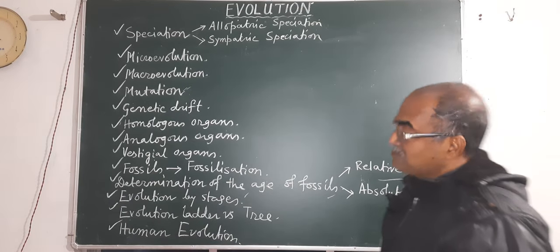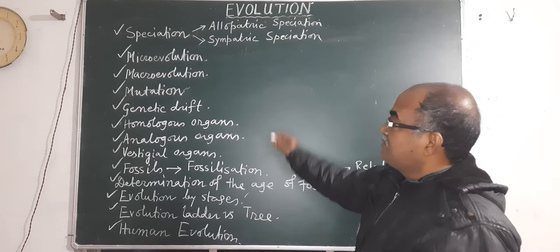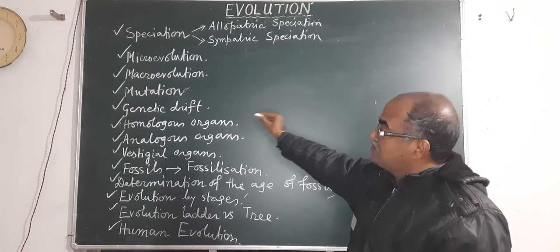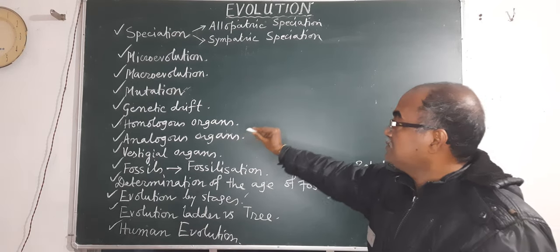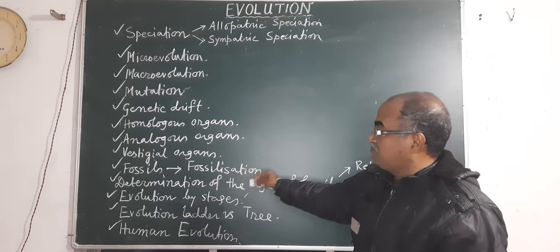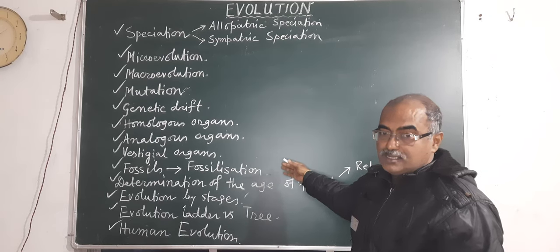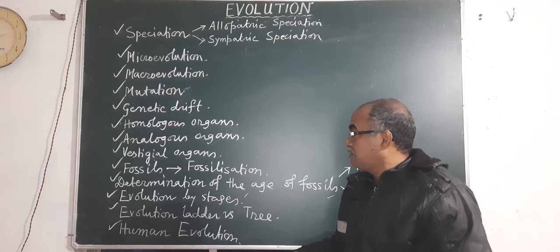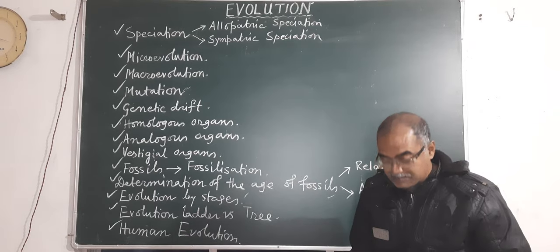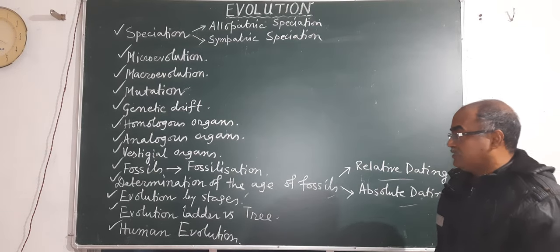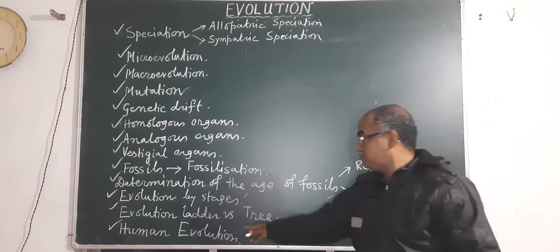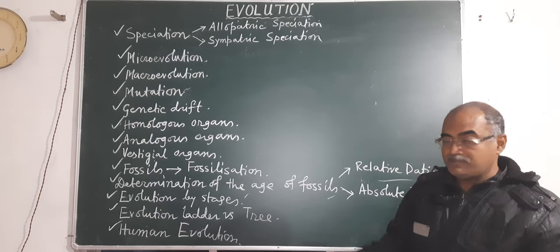So now probably you are clear about what we have studied today. Speciation — allopatric and sympatric speciation. Then microevolution, macroevolution, mutation, genetic drift, homologous organ, analogous organ, vestigial organ, fossil, fossilization — how it occurred by sedimentation. Determination of the age of fossil — that is relative dating and absolute dating. Then by what stages evolution occurs — evolution ladder versus evolution tree. And at last we studied about human evolution.